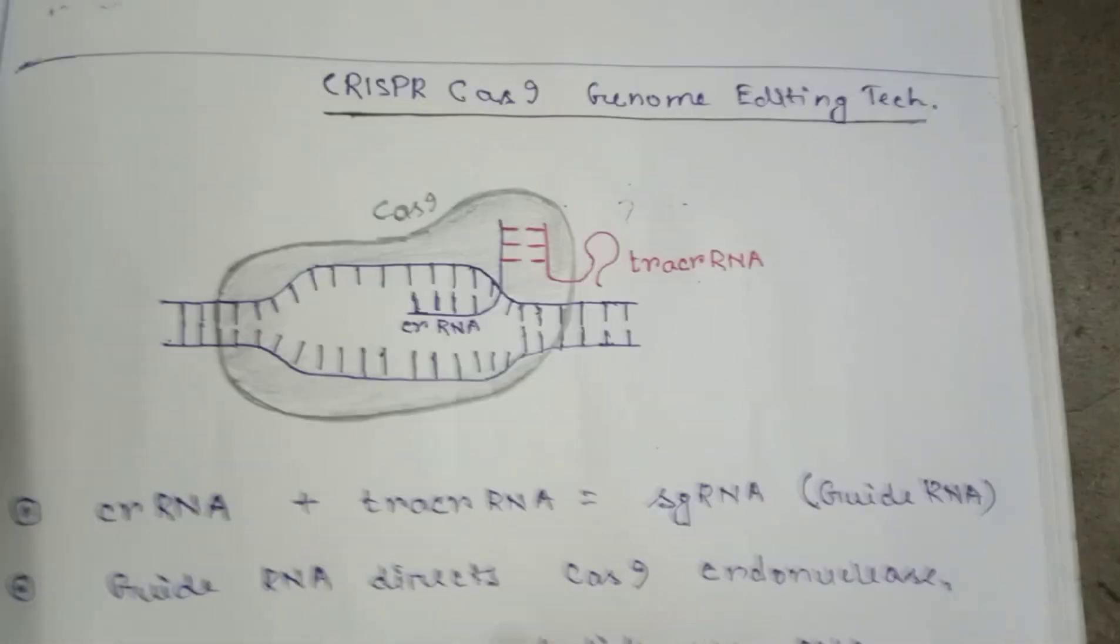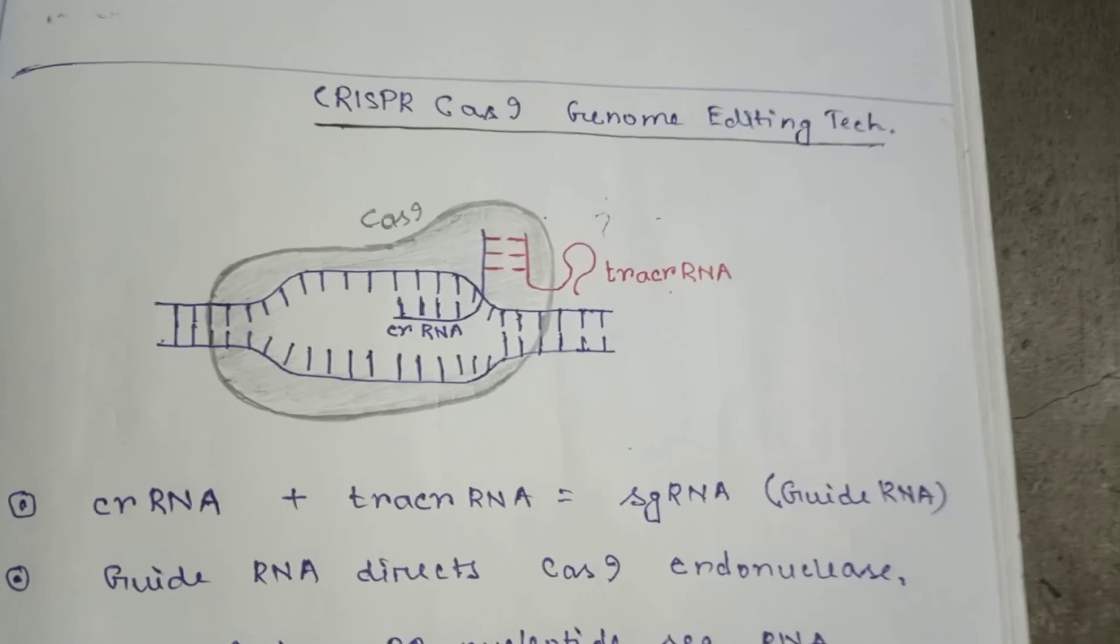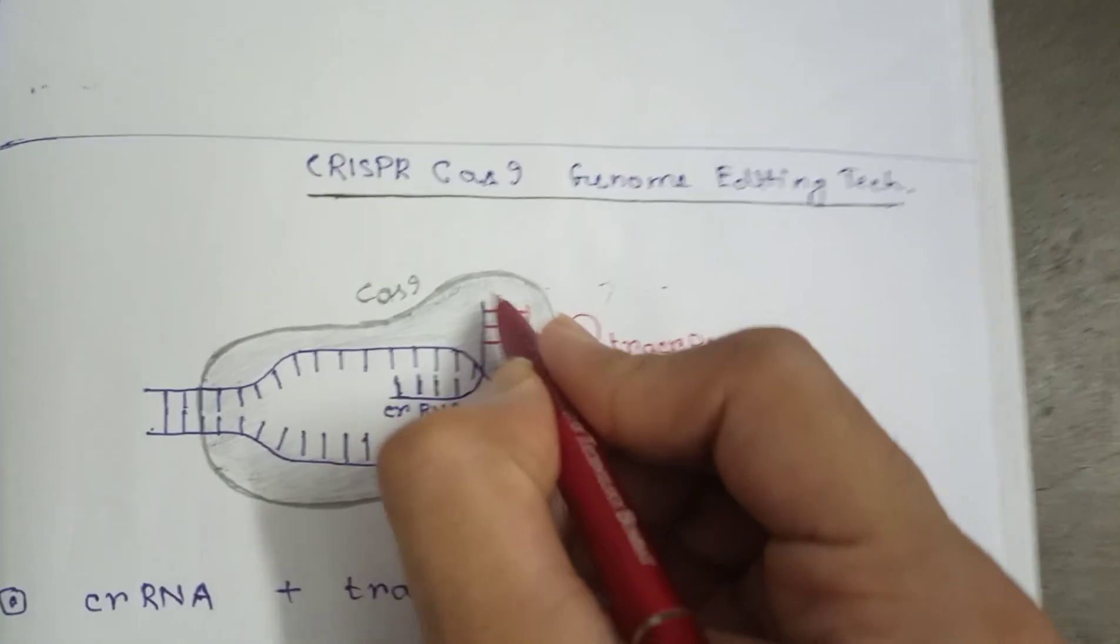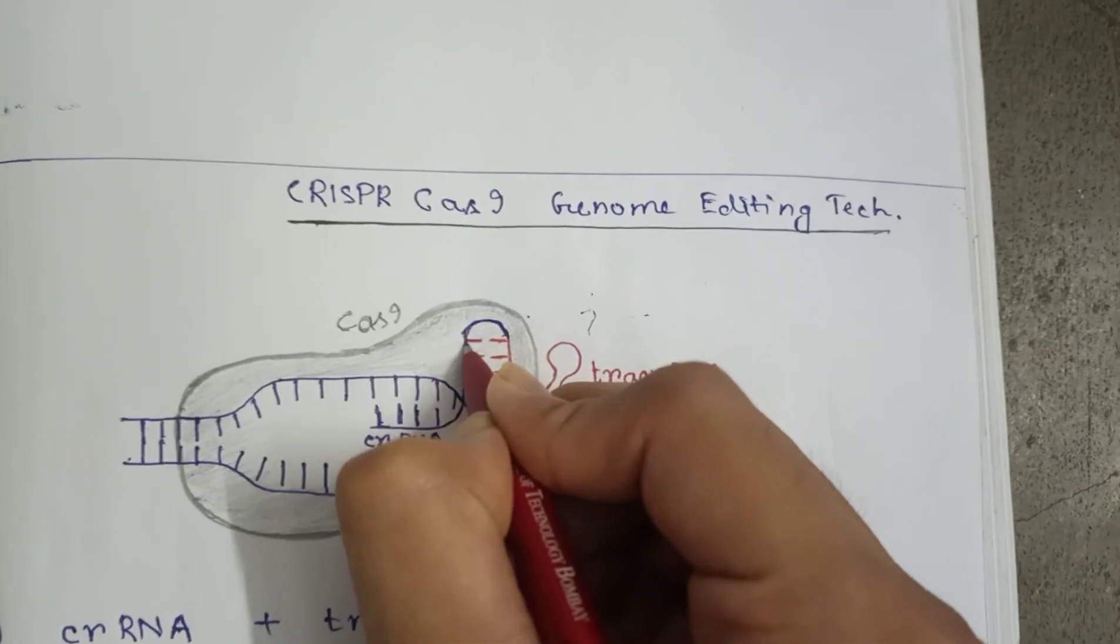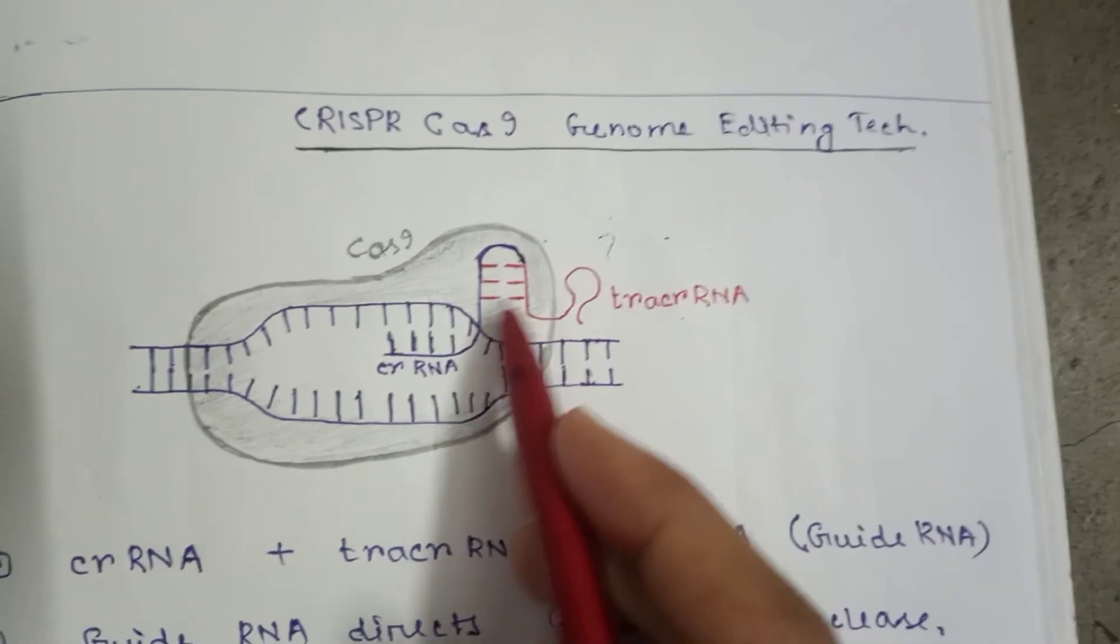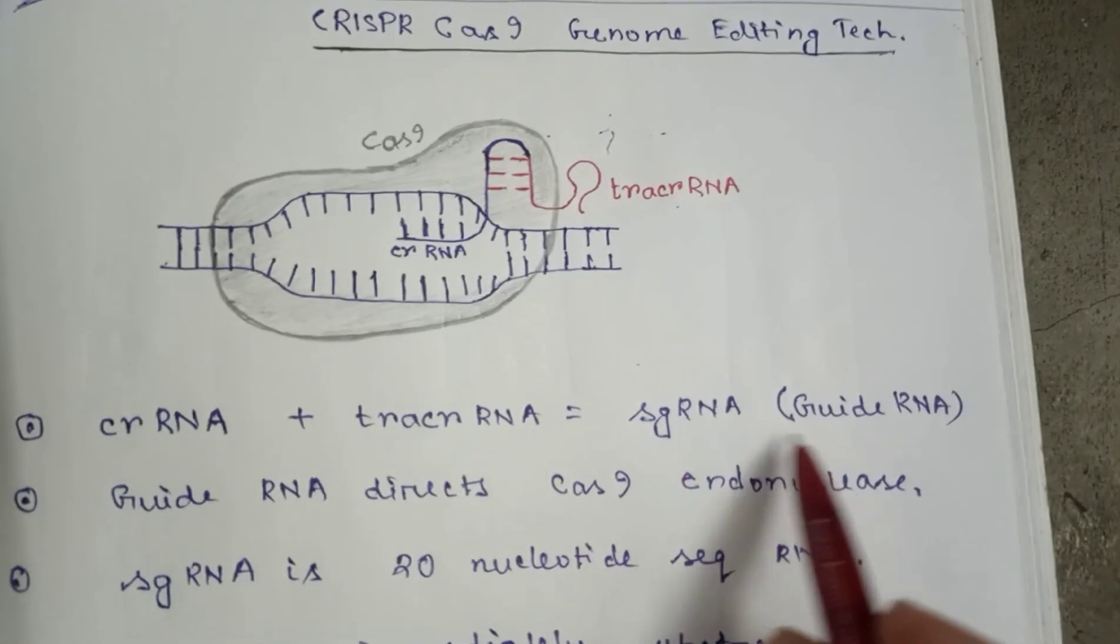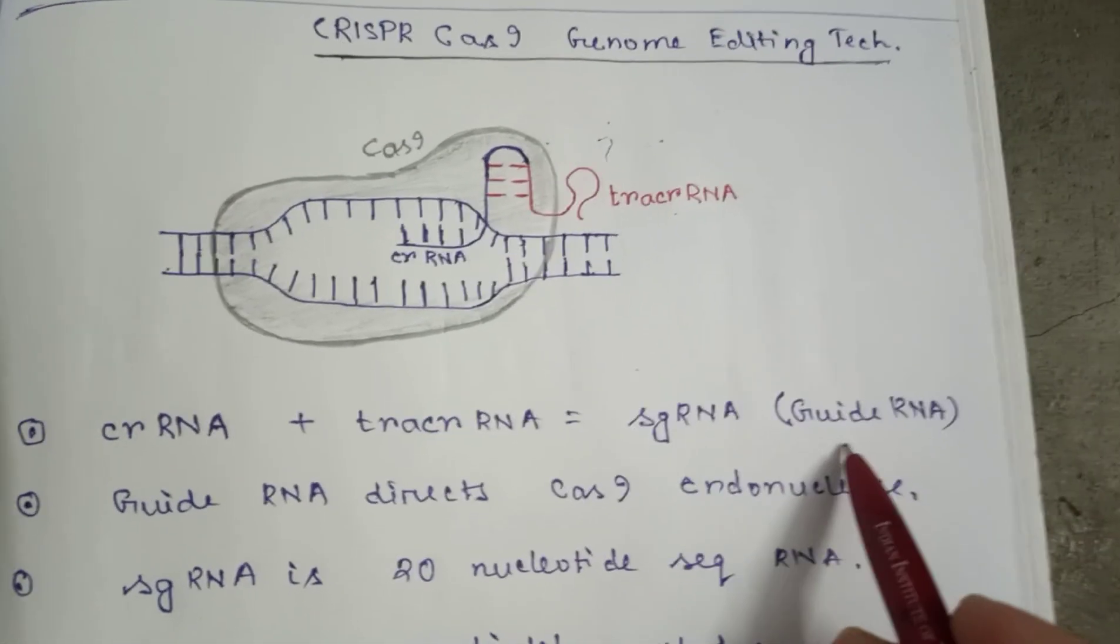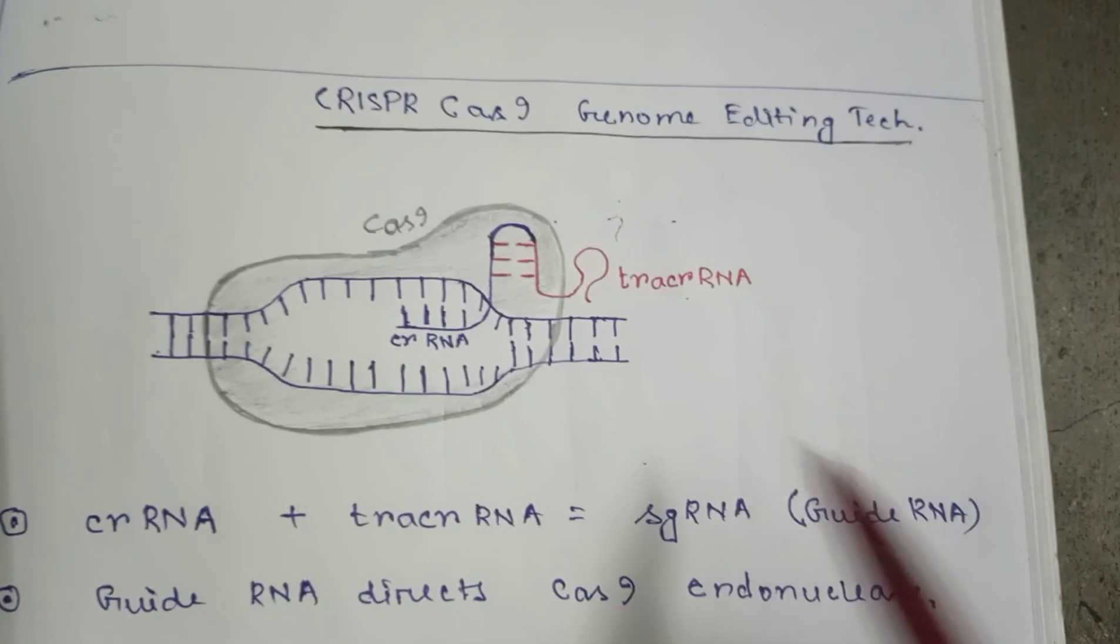When genetic engineering is happening, this part can be joined. If the tracer RNA and crRNA are joined, we will call it sgRNA or single guide RNA or guide RNA.